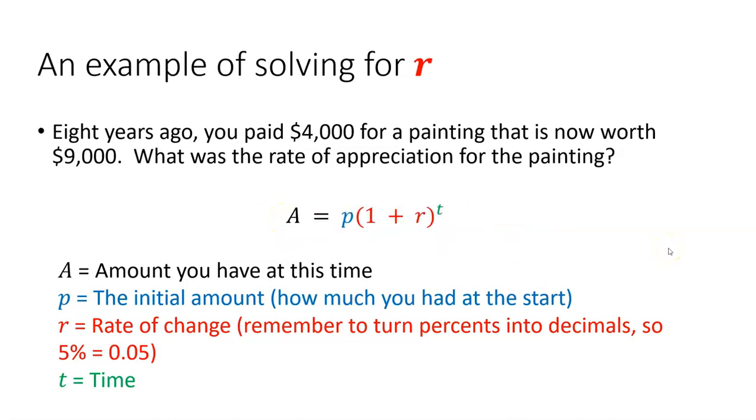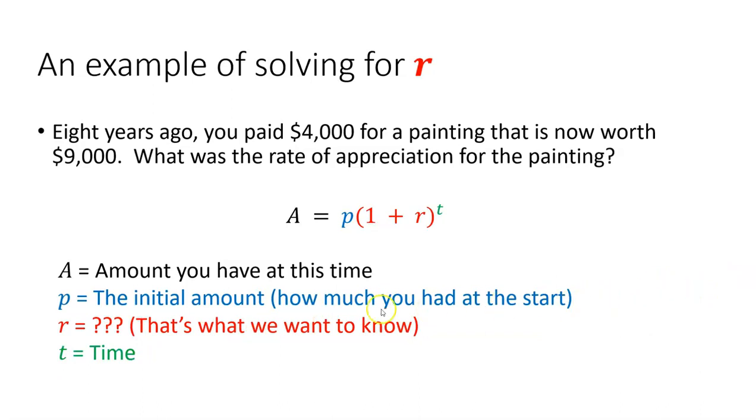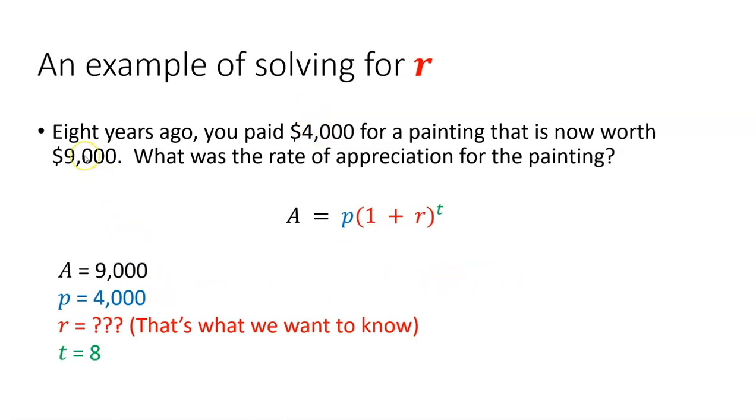So now we're set up, ready to go, and we can start to fill in A, p, r, and t if we know them. We don't know r. That's what we're trying to find, the rate of appreciation. So I'll put some question marks in for r. That's what we want to know. We don't know it now. Time is eight. We are told eight years ago is when we bought the painting and now it's eight years later. So time is eight years. The beginning amount or initial amount was $4,000. And then the amount currently, or eight years later time, that's the mark we're looking at, is $9,000.